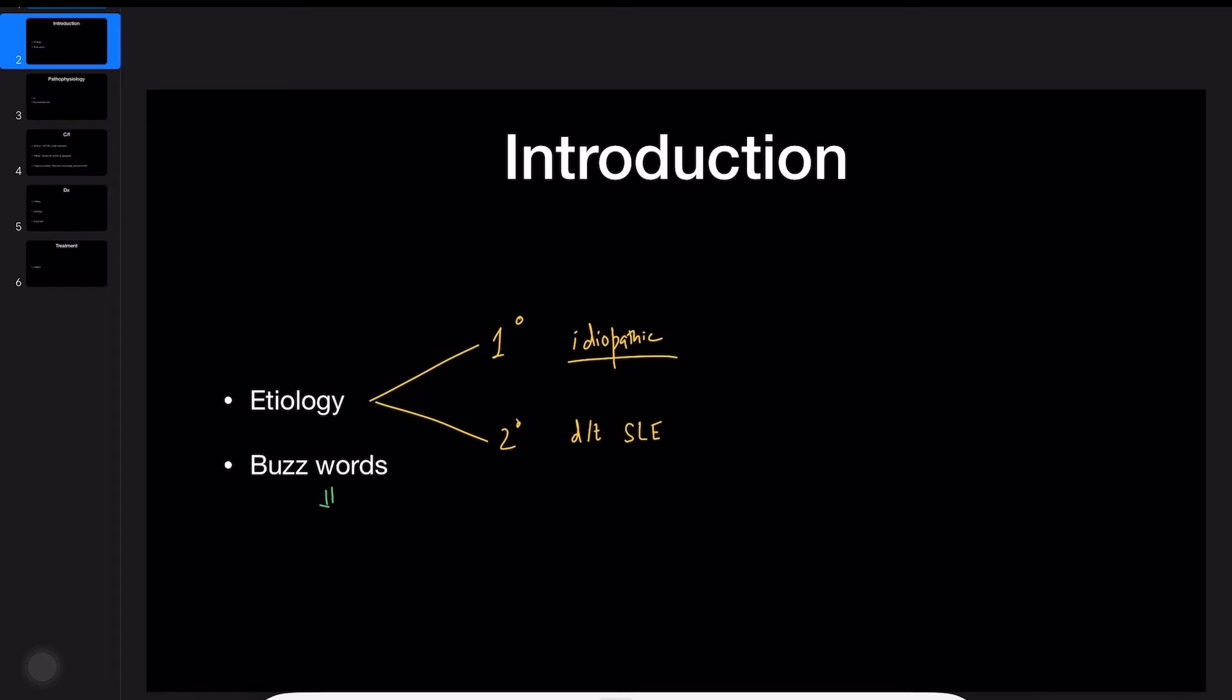Think of APS when a female has recurrent miscarriages or has frequent thrombotic episodes. These are the buzzwords and you have to think of APS when you see terms like these.